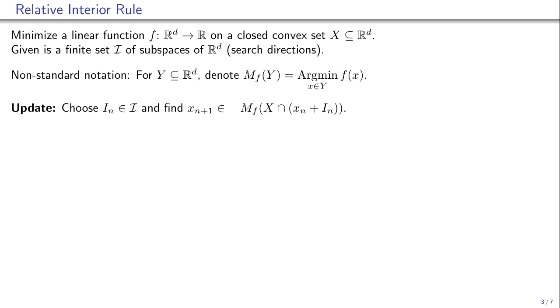Our key idea is to modify the update such that the next point is chosen from the relative interior of the set of block minimizers. We call this the relative interior rule.